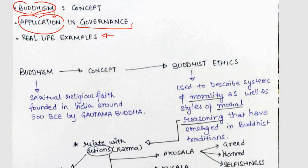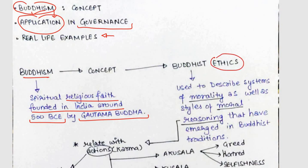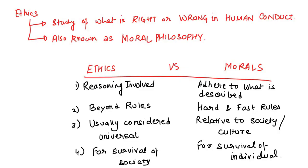Buddhism is a spiritual religious faith founded in India around 500 BC by Gautam Buddha. There are certain ethics found in Buddhism which you can apply in governance. Ethics is the study of what is right or wrong in human conduct — the way you conduct your life and society. It is also known as moral philosophy.